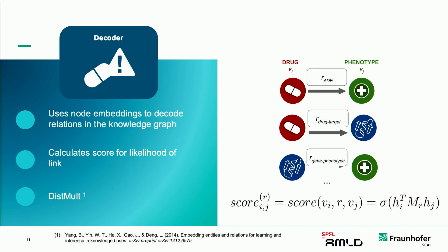In the decoder, we use the node embeddings to decode the relations in the knowledge graph. It uses DistMult, a bilinear form, to calculate the score for the likelihood between a drug and an adverse event. We can also predict any link in the knowledge graph — between drugs and targets, or between genes and phenotypes.